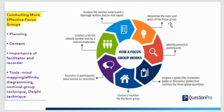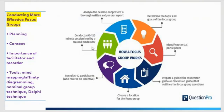How does a focus group work? You want to determine the topic and goals of the focus group and identify potential participants. You want to prepare a moderator guide or discussion guide that outlines the focus group questions, and choose a location. Recruit 6 to 12 participants and give them an incentive for participating. Conduct a 90-minute to 120-minute session led by a trained moderator who can bring everyone back to the topic at hand. Then analyze the session and present a thorough written or verbal report.